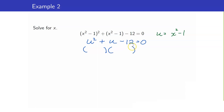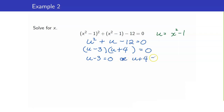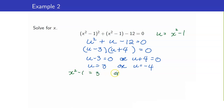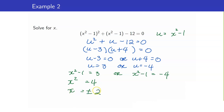We factor u² + u - 12 as (u + 4)(u - 3) = 0. The factors of -12 that add up to +1 are 4 and -3. So we set each factor to 0: u - 3 = 0 or u + 4 = 0, giving u = 3 or u = -4. Don't forget to substitute back: x² - 1 = 3 gives x² = 4, so x = ±2.